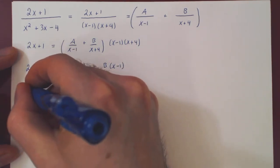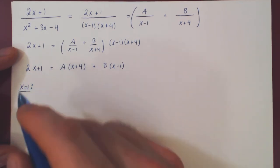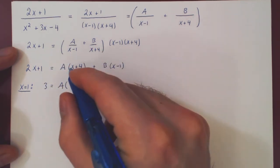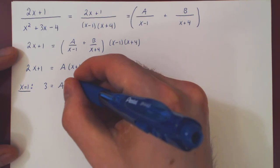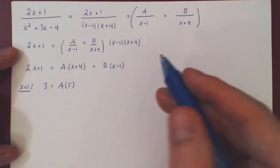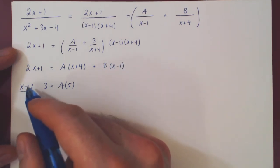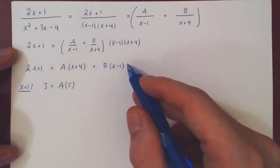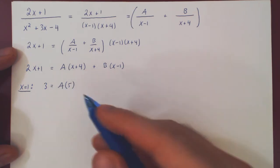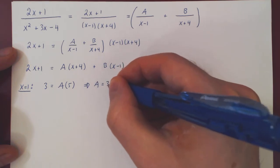Replacing x with 1: 2 times 1 plus 1 equals 3, equals A times 1 plus 4 equals 5A, plus B times 1 minus 1 equals 0. So 3 equals 5A, and dividing by 5, A equals 3 over 5.